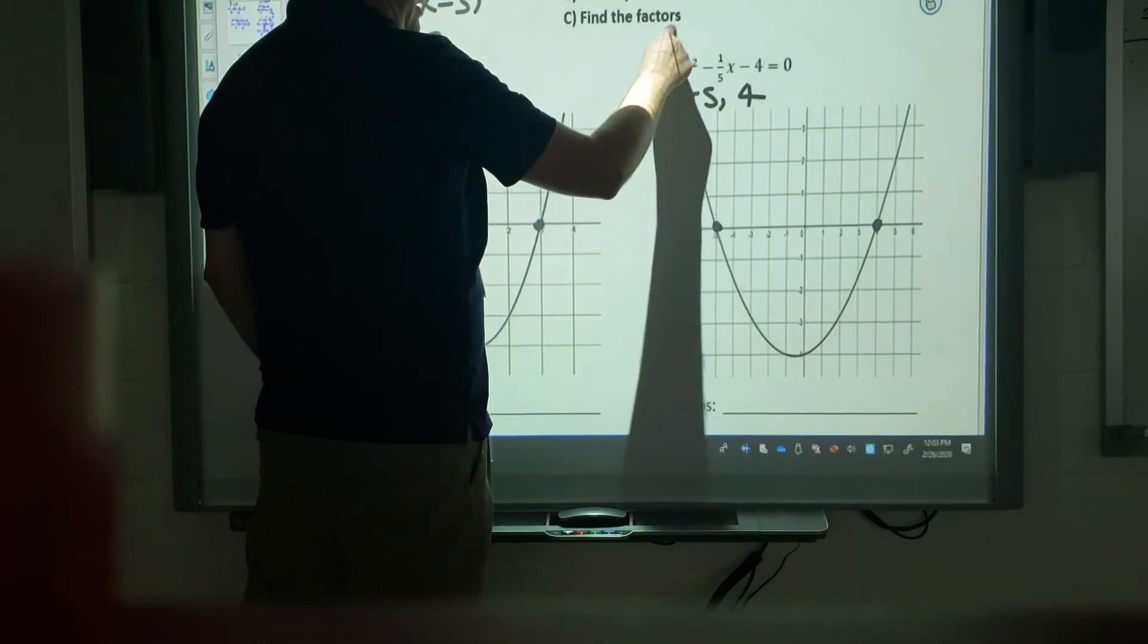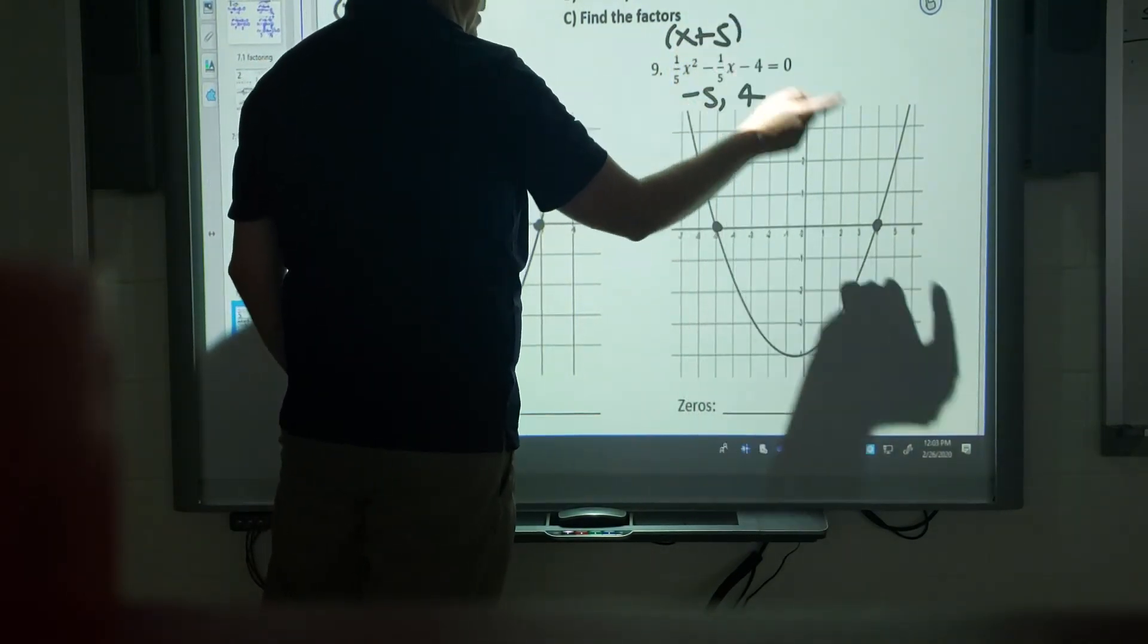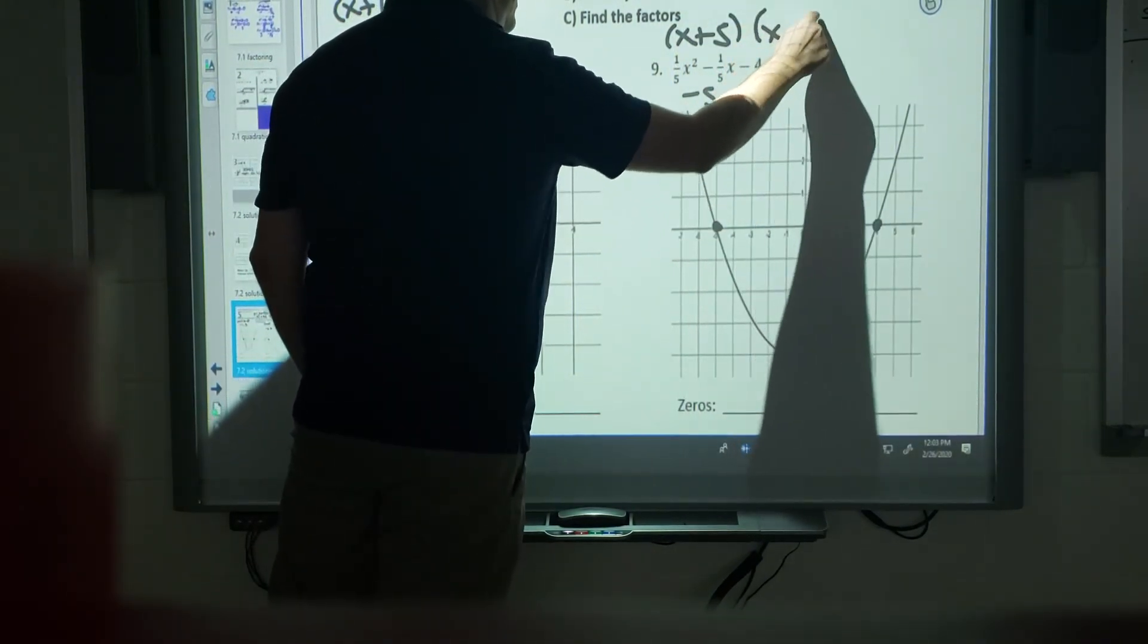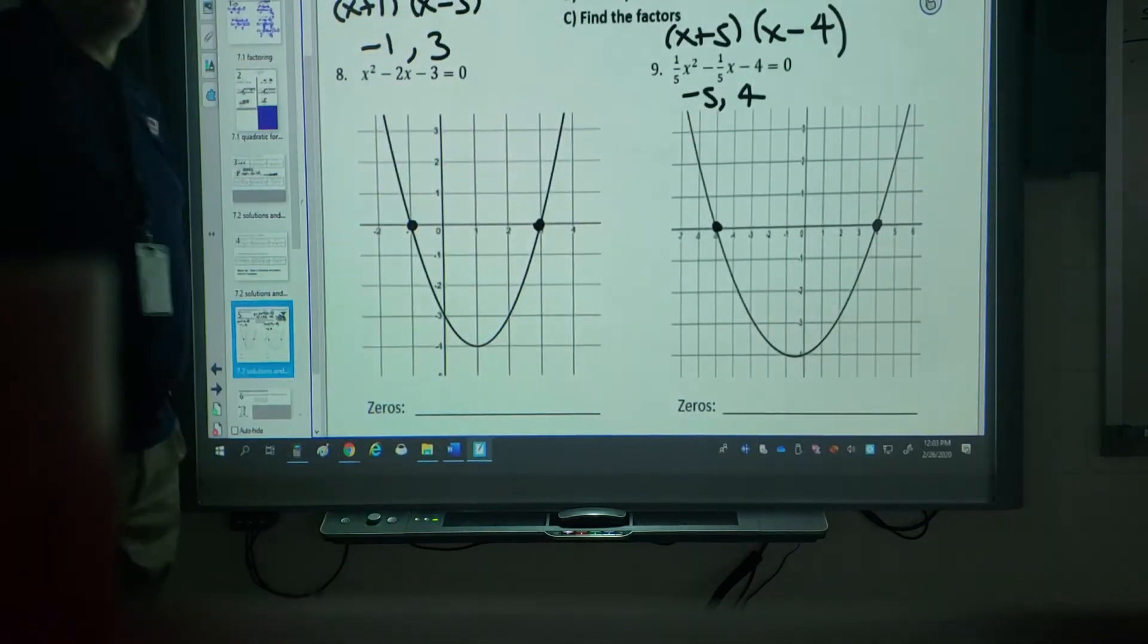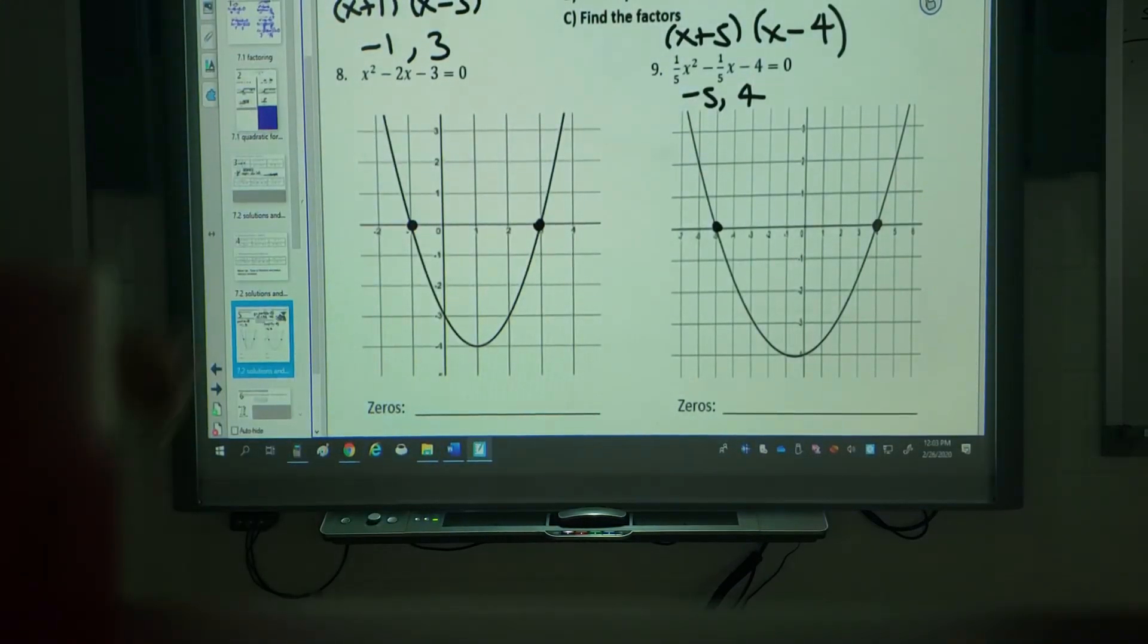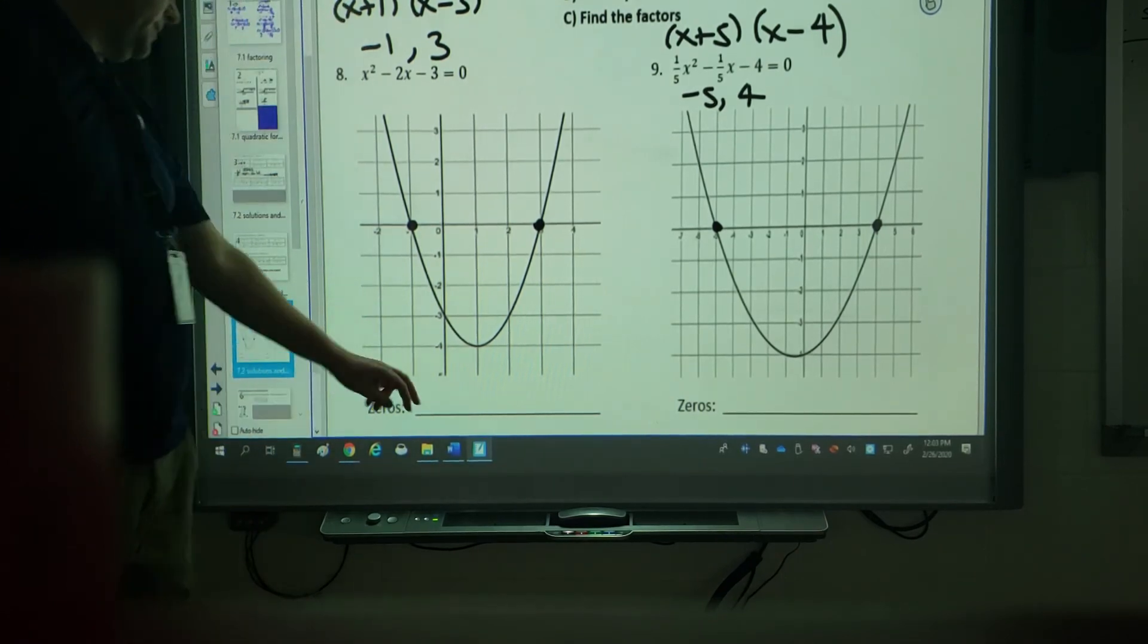Instead of negative 5, positive 5. And instead of positive 4, negative 4. So the roots, solutions, zeros, and x-intercepts, you just write them down as the x-intercepts. And then for the factors, you've just got to know to do the opposites.